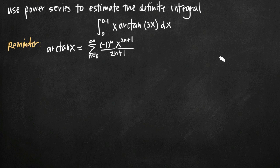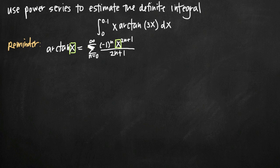Keep in mind that this arctan of x power series formula assumes that the value inside the arctan function is just x. You'll notice that our function is similar to arctan of x but different — we've got 3x inside our arctan function, and we also have an x value multiplied out in front. What we need to do is modify this formula to be a power series for x·arctan(3x).